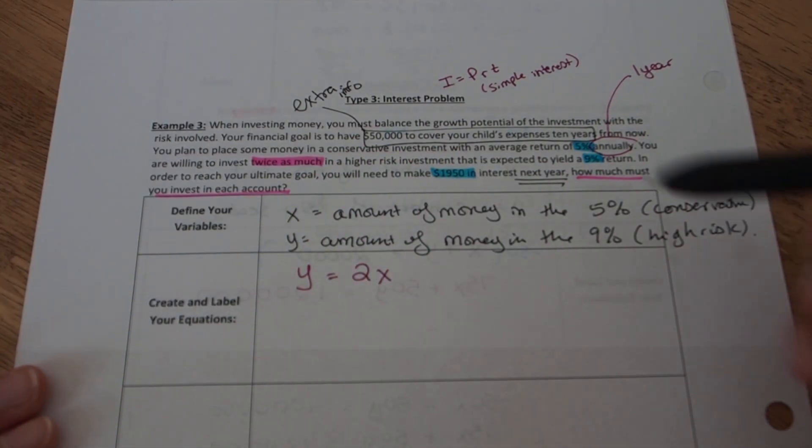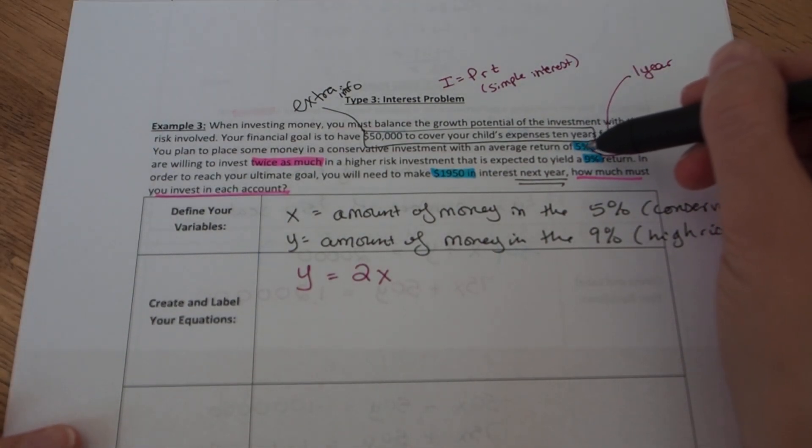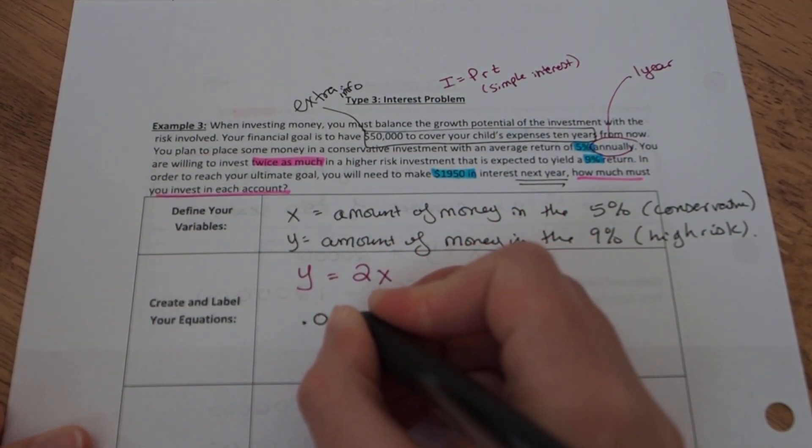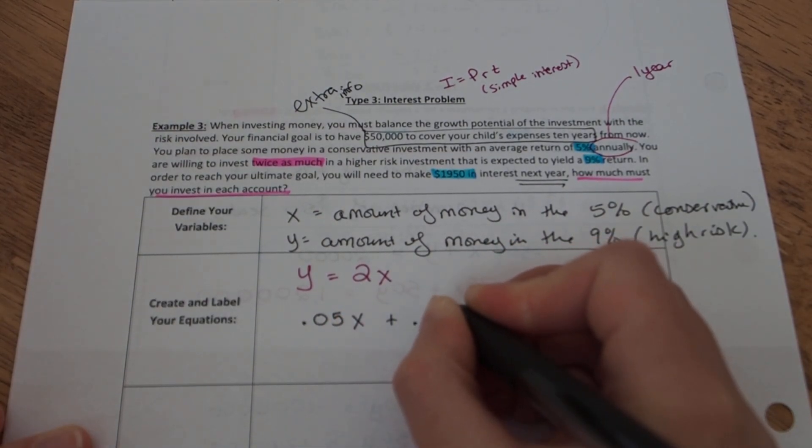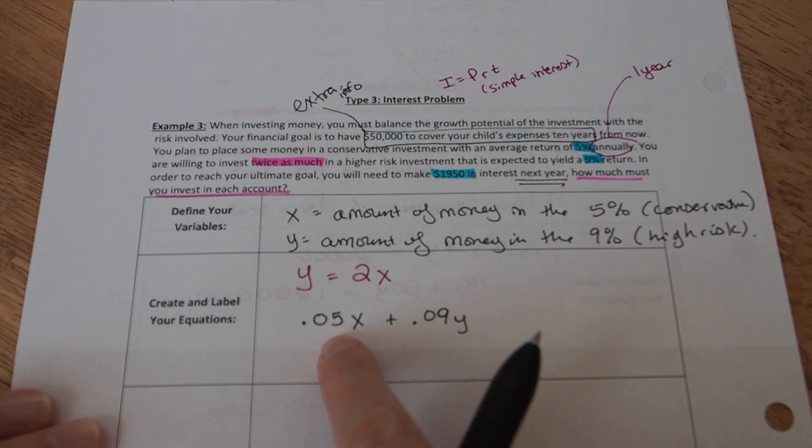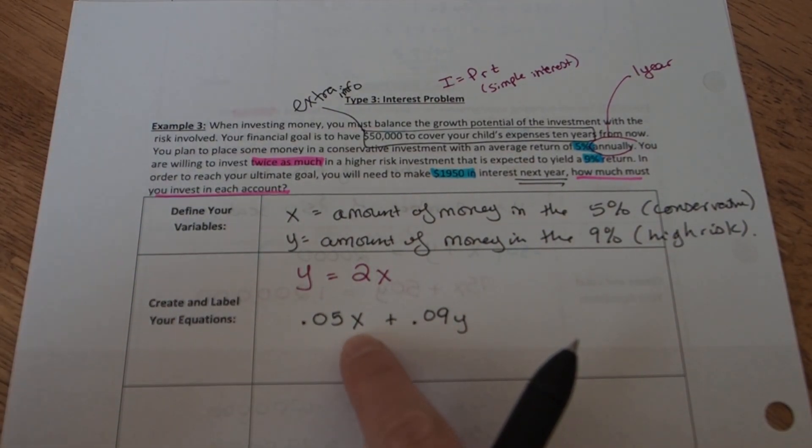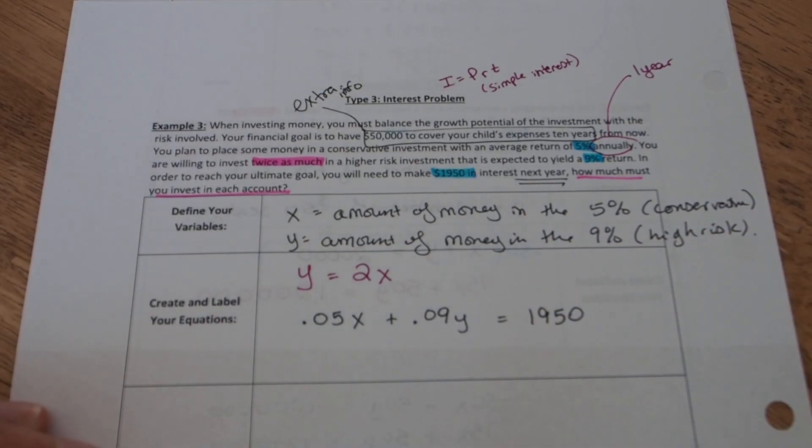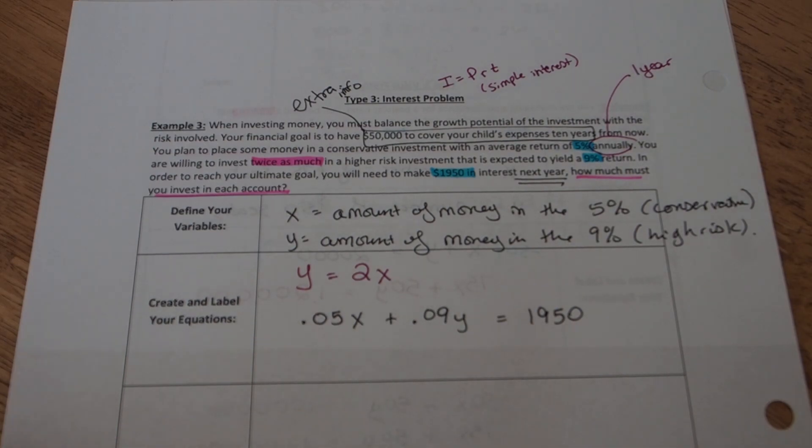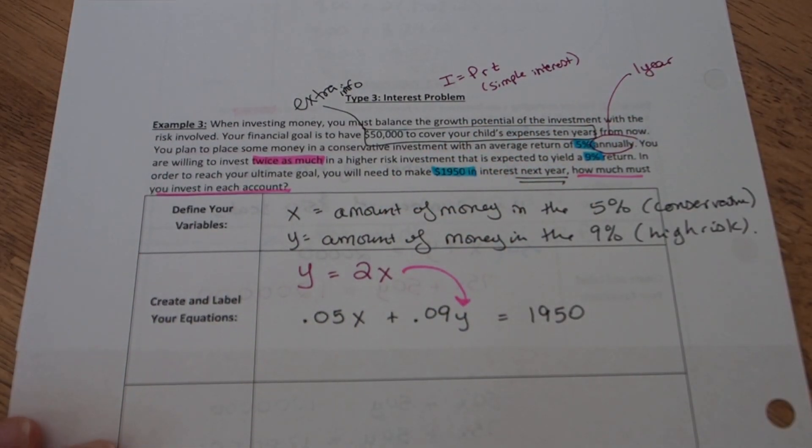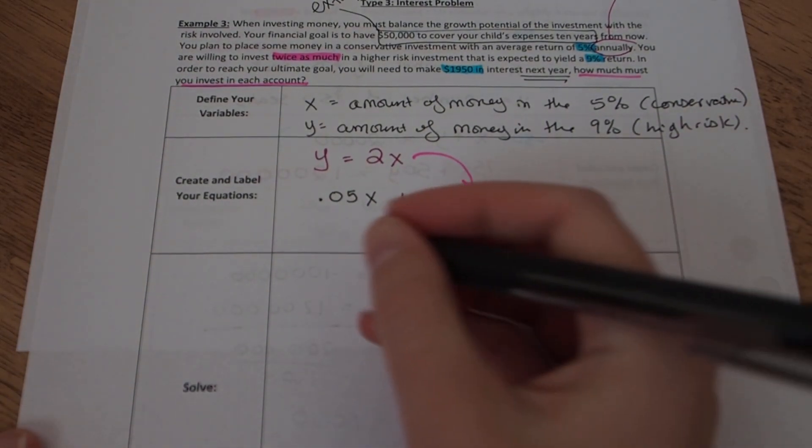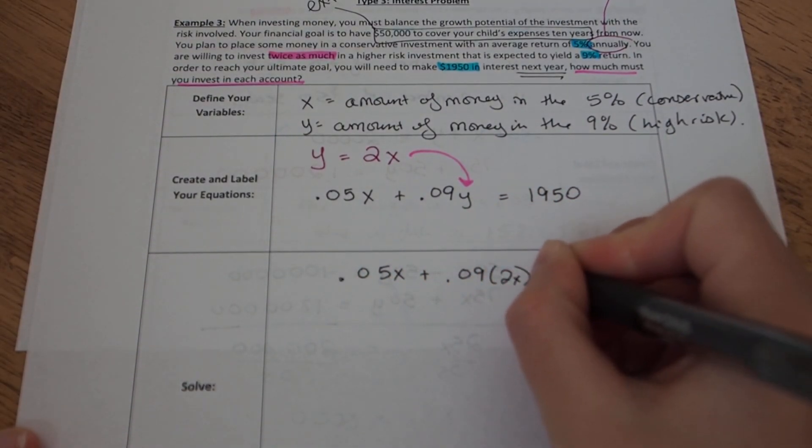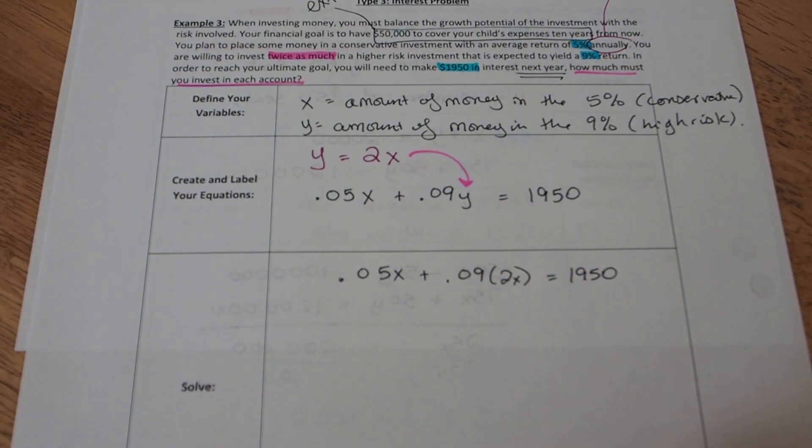So I've highlighted that I'm willing to invest twice as much in the high risk investment. So that means the amount that I put in high risk y can be two times the amount I put in the lower risk x. I have twice as much in the high risk. High risk equals two times the conservative. That's my first equation. And it just deals with the twice as much factor. The next equation is going to deal with the interest rates. And the interest rates need to be converted into decimal to use them. So 5% is going to be 0.05. So 0.05 is going to be the interest rate for x account plus 0.09 is going to be the interest rate for y account. You multiply the interest times the amount. It gives you the amount of interest.